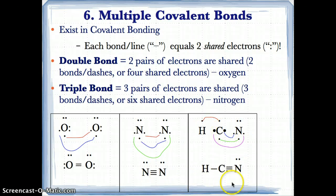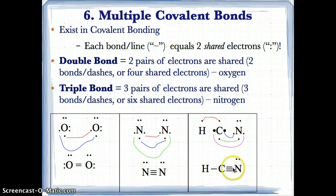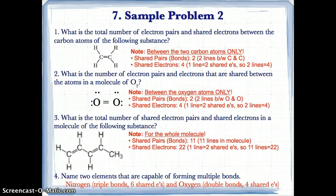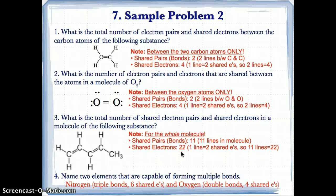Another example: between C and N, you have three pairs, so we have three lines or six shared electrons. To solve these problems, count the number of lines to get the number of shared pairs or bonds, then multiply by two to get the number of shared electrons.